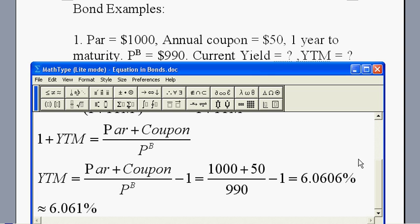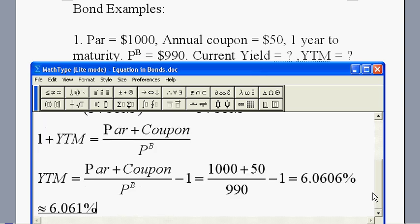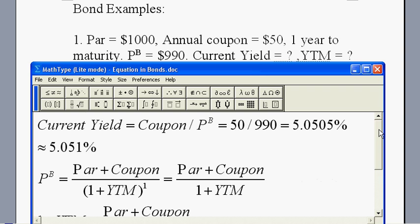Now we have both the current yield, 5.051%, and the yield to maturity, 6.061%. The yield to maturity is a little bit higher than the current yield. Why is that?